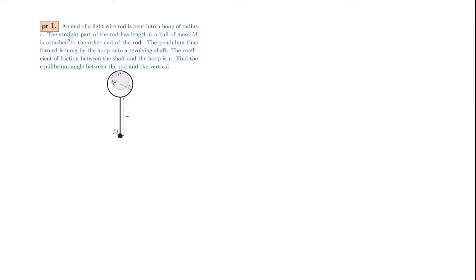Let's get right into problem number one. An end of a light wire rod is bent into a hoop of radius r. The straight part of the rod has length l. A ball of mass m is attached to the other end of the rod. The pendulum thus formed is hung by the hoop onto a revolving shaft. The coefficient of friction between the shaft and hoop is μ. Find the equilibrium angle between the rod and the vertical.